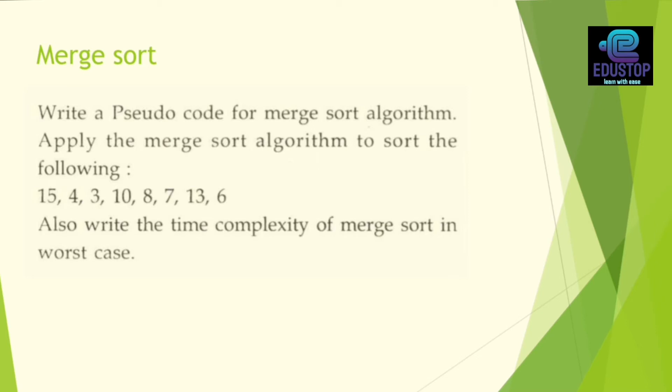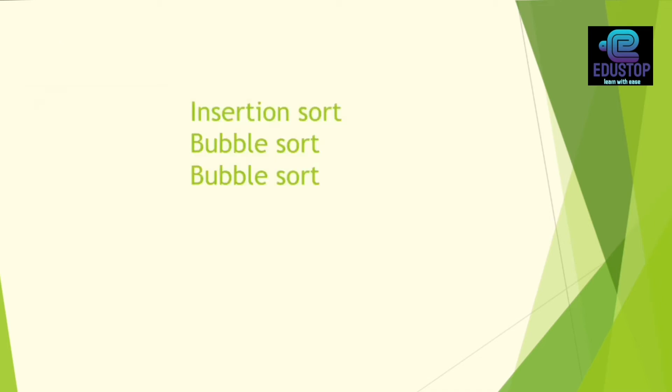Merge sort, you have to prepare. All the sorting algorithms you have to prepare, same as it is. The question is you have to have pseudocode. We have to write pseudocode for merge sort, merge sort algorithm. We will have to give an array here: 15, 4, 3, 10, 8, 7, 13, and time complexity in worst case. In this way, you have to use the sorting algorithm like insertion sort or bubble sort, so you have to prepare them all.